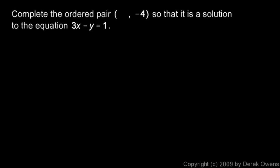Here's another example. Complete the ordered pair something comma negative 4, and the unknown value there is x and the negative 4 is y. So same equation here, 3x minus y equals 1.